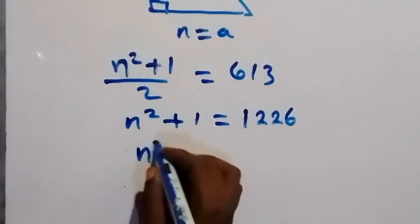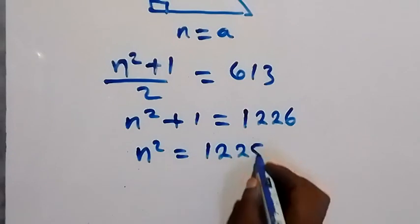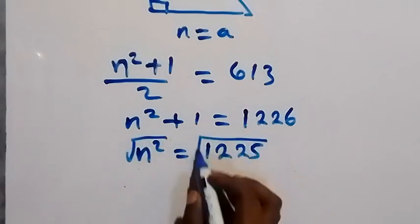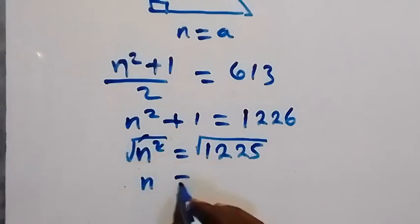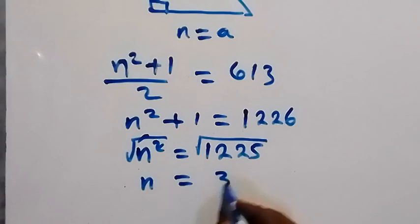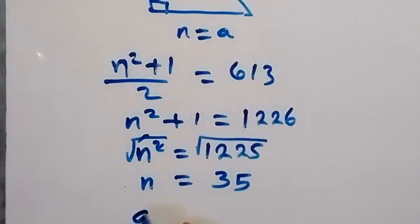equals 1225. Now taking the square root on both sides, we have n. The square cancels the square root and will be equal to 35. So this implies that a is 35. We can say a equals 35.